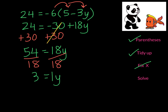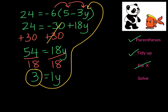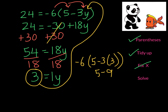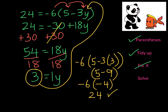At this point we can take our solution and substitute it into the original equation. We will take negative 6 and multiply it times what's in the parentheses. So first negative 3 times 3 will give me negative 9. I have 5 but I owe 9, so I owe 4. This will be multiplied by negative 6 to give me 24. So we solved it correctly.